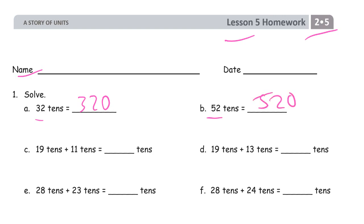Then we're adding 19 tens plus 11 tens. We're going to see that this 9 and that 1 is going to make for another 10 tens. So we have 10, 20, 30, 30 tens.